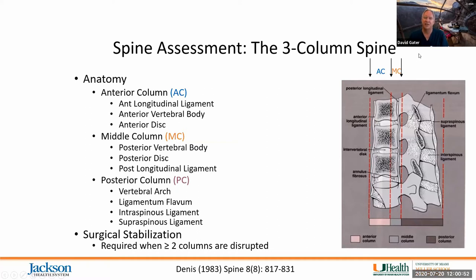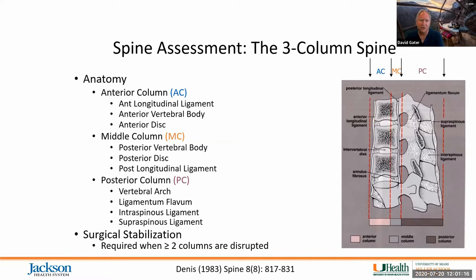The posterior column includes the vertebral arch, the ligamentum flavum, the supraspinous ligament, and the intraspinous ligaments. The key point of the three-column spine was that if you had two or more columns disrupted, the spine was considered to be unstable. For quite a while, that was how orthopedists and neurosurgeons determined whether additional surgical stabilization was needed.